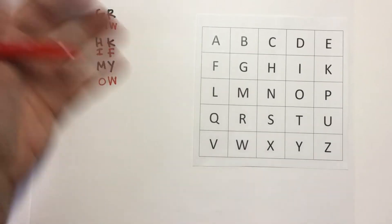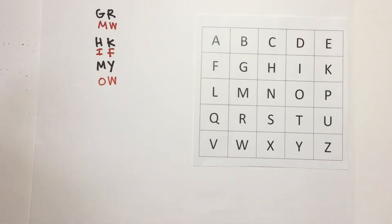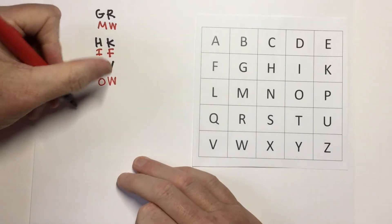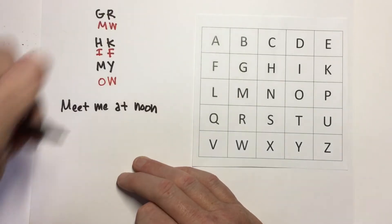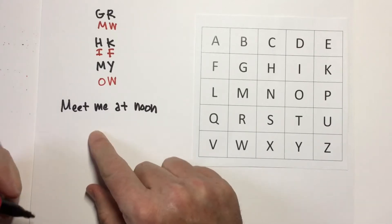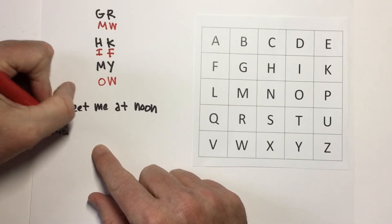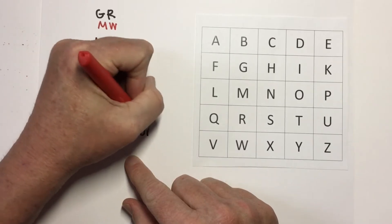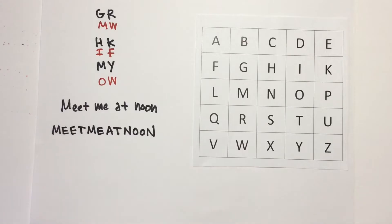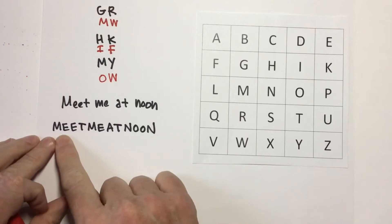Now, you will note that every time we use this, this means we're always encoding two letters at a time. So, let us say that I want to send the code meet me at noon. Well, the first thing I will do is I'm going to write my message as just one string of letters with no spaces. So, I will write it as MEETMEATNOON. So, that is the message that I wish to code. Now, I will get my Playfair code grid, and I will begin to code. Now, again, we're always coding two letters at a time. So, I'm going to start with the first two letters, M and E.